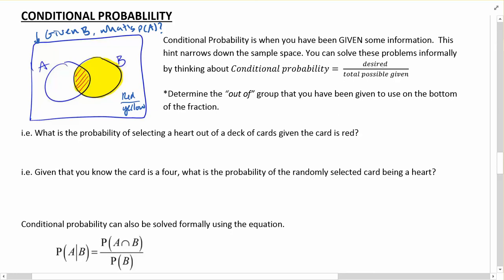That's what we talk about using it informally. You can think about what's desired. A is just that little part of the red there, and out of the total possible given, knowing that it was B, we would know out of B. So if you determine the out of group, that will go on the bottom of your fraction.